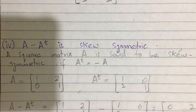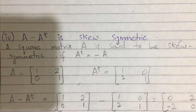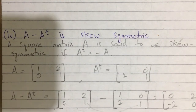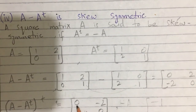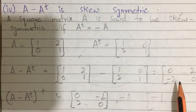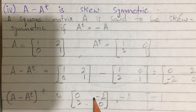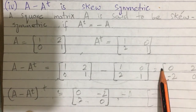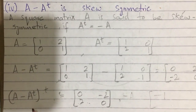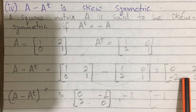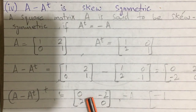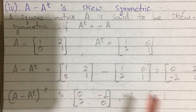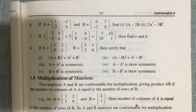Now (A - A^T)^T should equal minus A. We take A: [0, 2; -2, 0] and its transpose gives [0, -2; 2, 0]. We also take minus A and find it equals [0, -2; 2, 0]. Here the signs have changed: where there was 2, it became -2, and where there was -2, it became 2. So it is proved that A - A^T is skew-symmetric, as its transpose equals minus A.